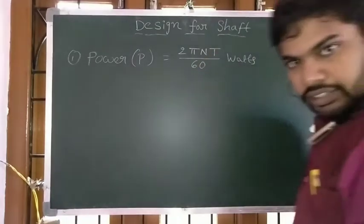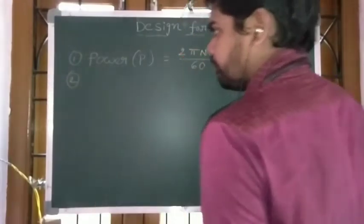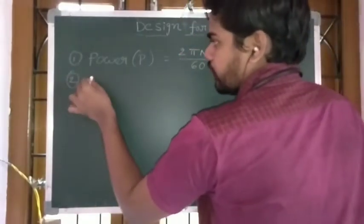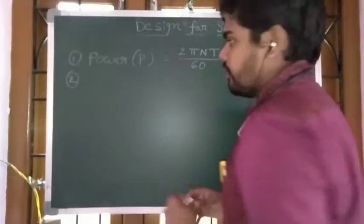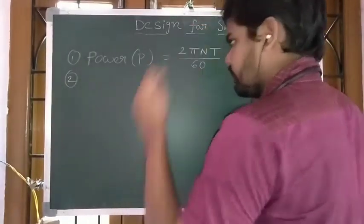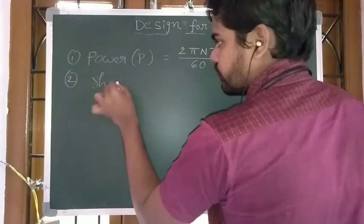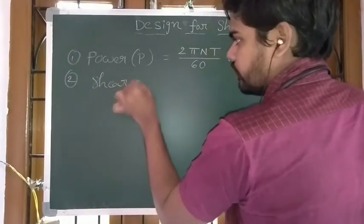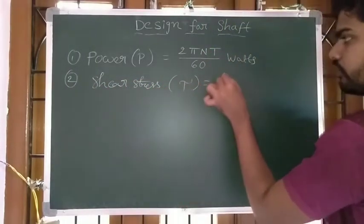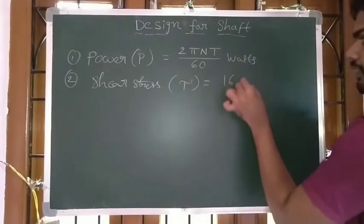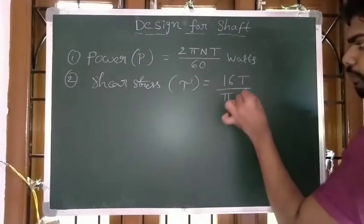Second formula: the relation between torque and shear stress. Tau is equal to 16T divided by pi D cube.